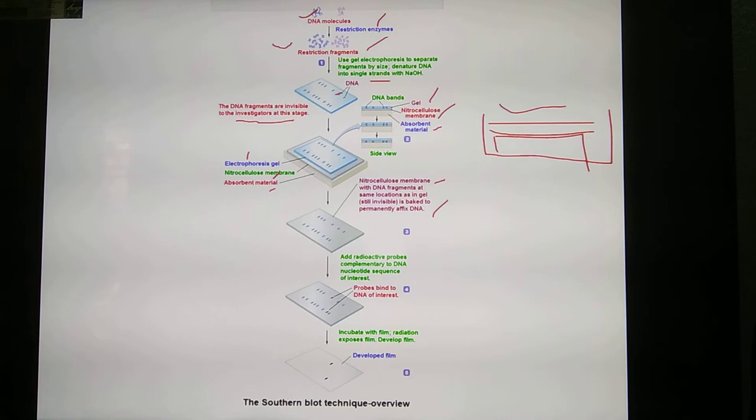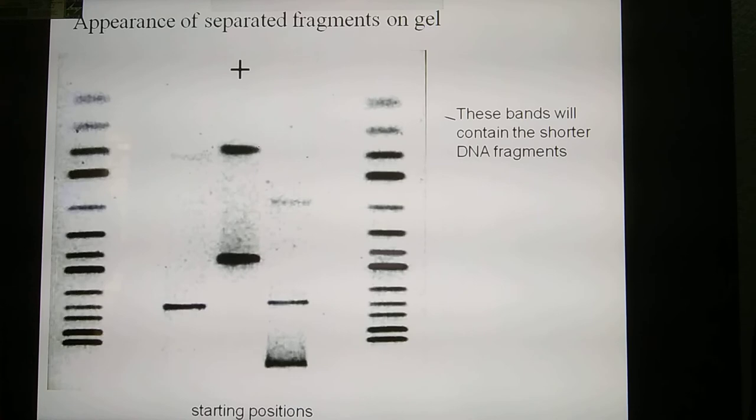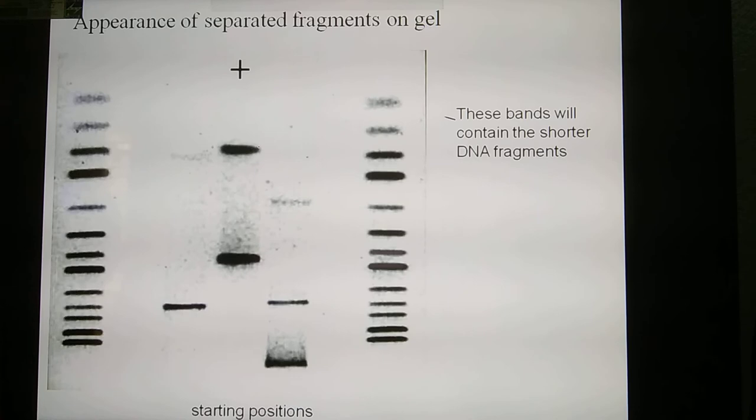Next, the probe. Add the DNA probe complementary to the target DNA. This is a sample of single-stranded DNA. We add DNA probes that will bind to the DNA. Southern blotting allows us to visualize the appearance of separated fragments.